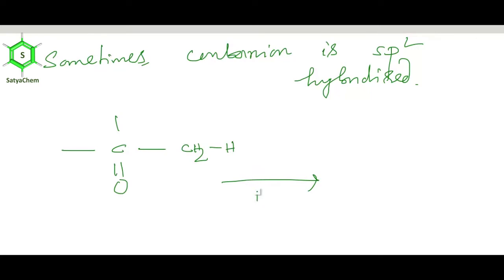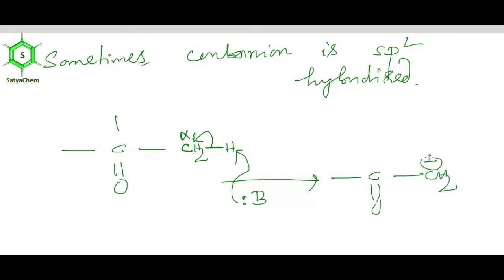When a strong base abstracts the alpha hydrogen adjacent to a carbonyl group, the negative charge formed at the alpha carbon is in conjugation with the C=O double bond — it enjoys resonance. When resonance is possible, the carbanion is sp2 hybridized. The negative charge and electron pair reside on an sp2 orbital rather than an sp3 orbital, enabling delocalization with the adjacent pi system.